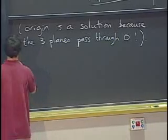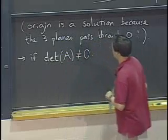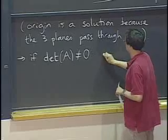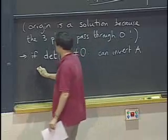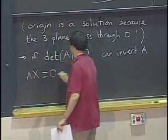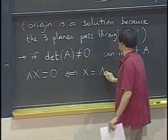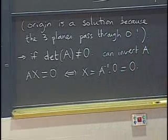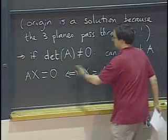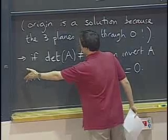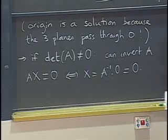So now there's two sub cases. One case is if the determinant of the matrix A is non-zero. Well, that means that we can invert A. So, if we can invert A, then that means we can solve the system by multiplying by A inverse. If we multiply by A inverse, we'll get x equals A inverse times zero, which is zero. We've solved it. No other solution.